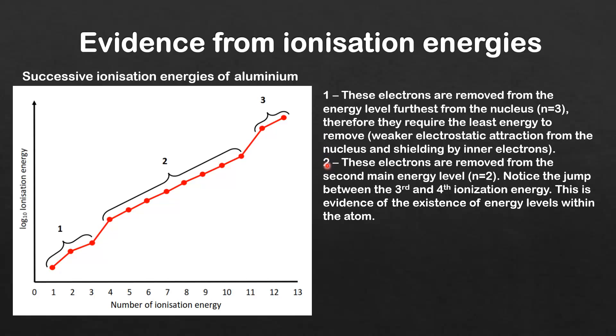Next we look at band two. These electrons are removed from the second main energy level (n=2). Notice the jump between the third and fourth ionization energy. This is evidence of the existence of energy levels within the atom.